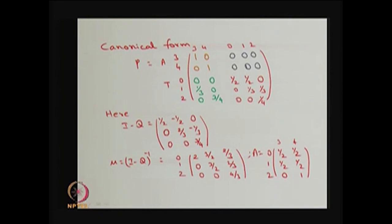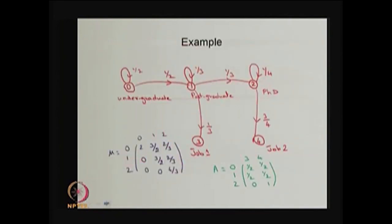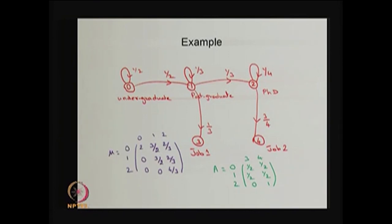I am not giving the numerical calculations here — just see the results. This gives the mean time up to absorption and the probability of absorption. Let us discuss the probability of absorption first. If the system starts from state 0 (undergraduate), state 3 is job 1. So the probability of being absorbed into job 1 is some value. This is a probability mass function — either you will be in job 1 or job 2.